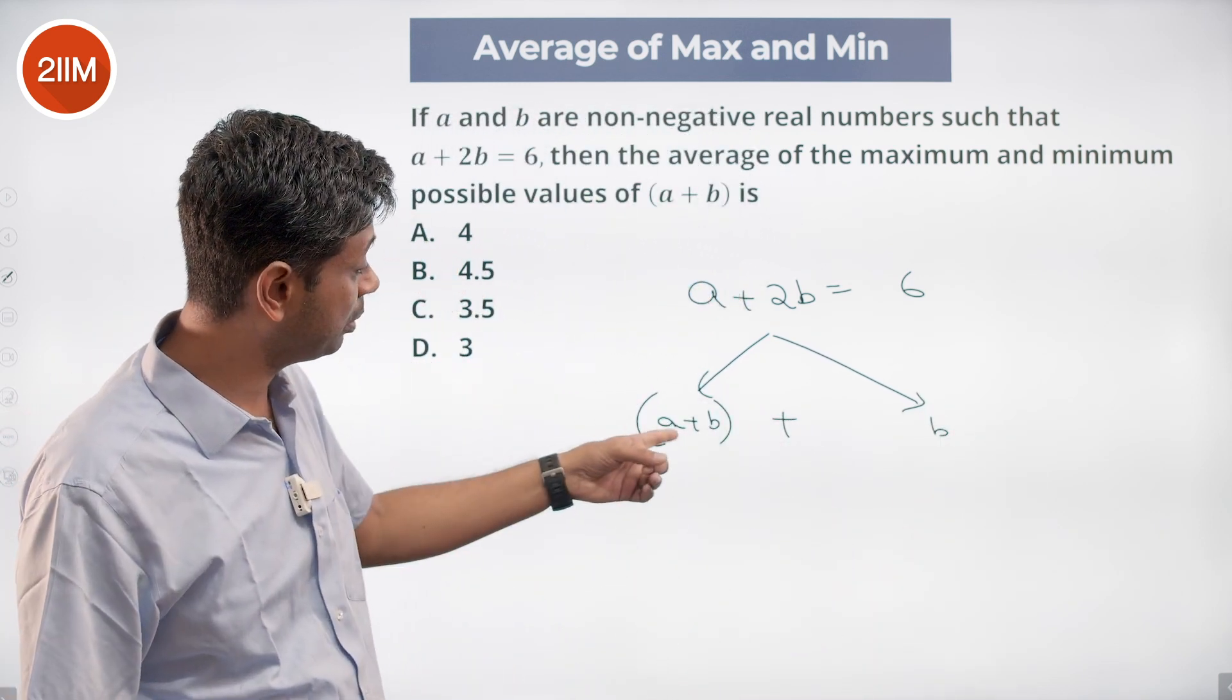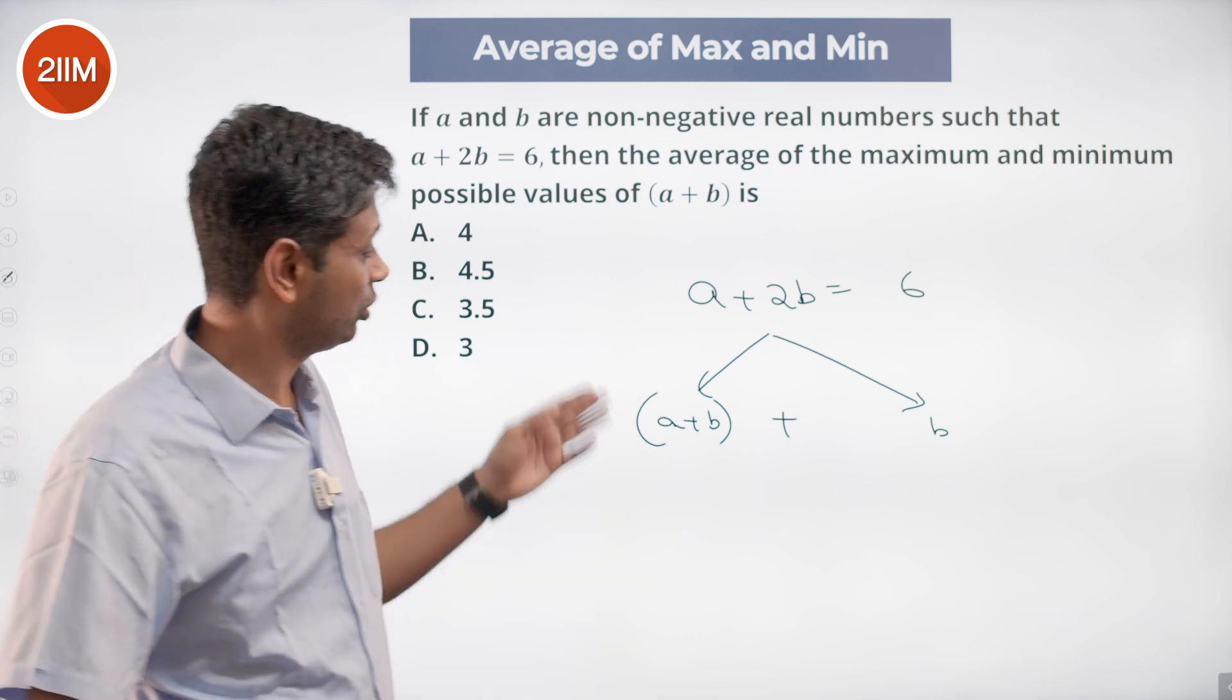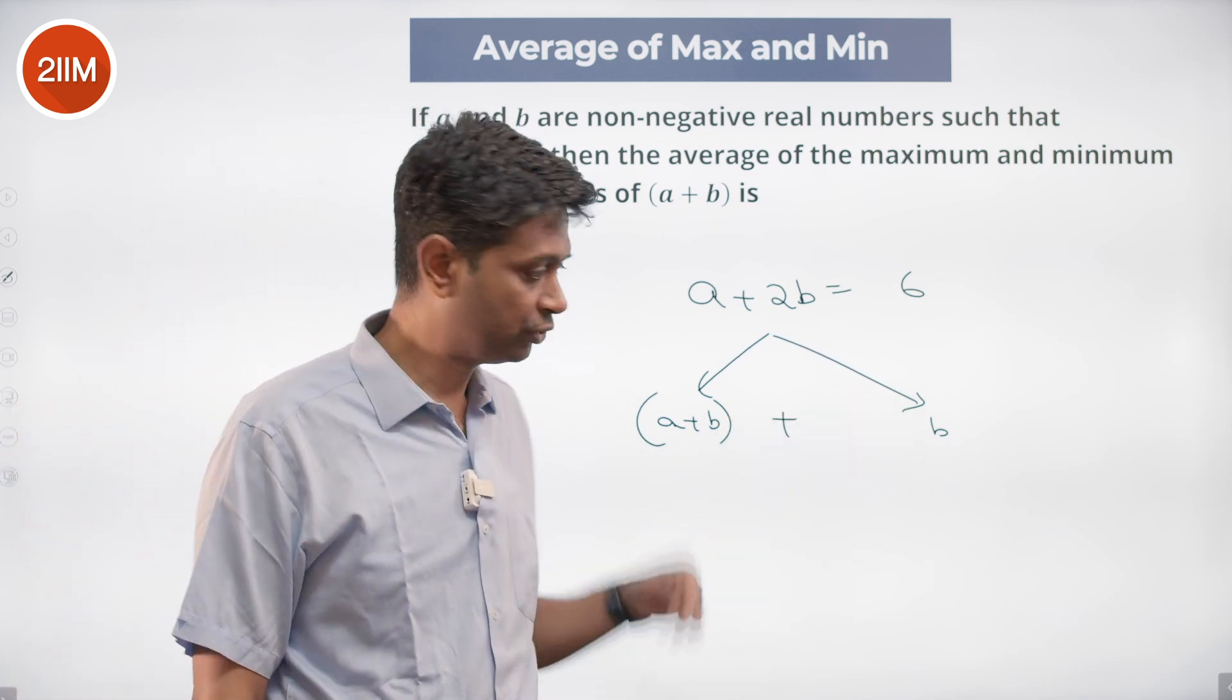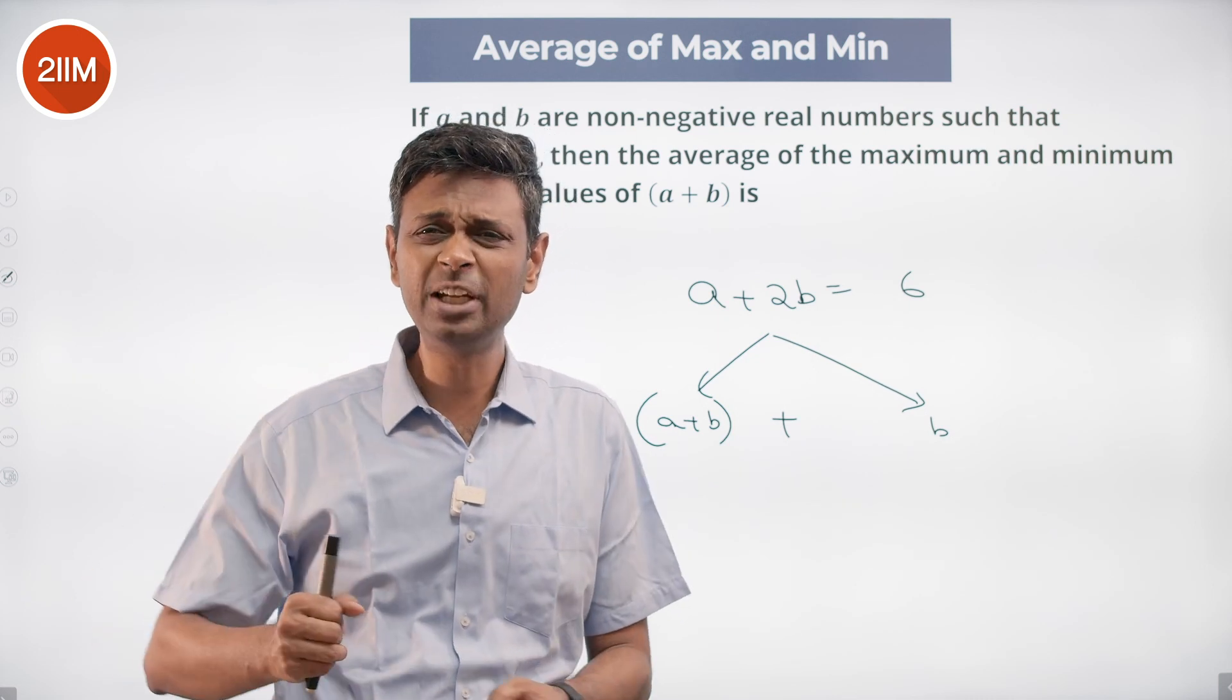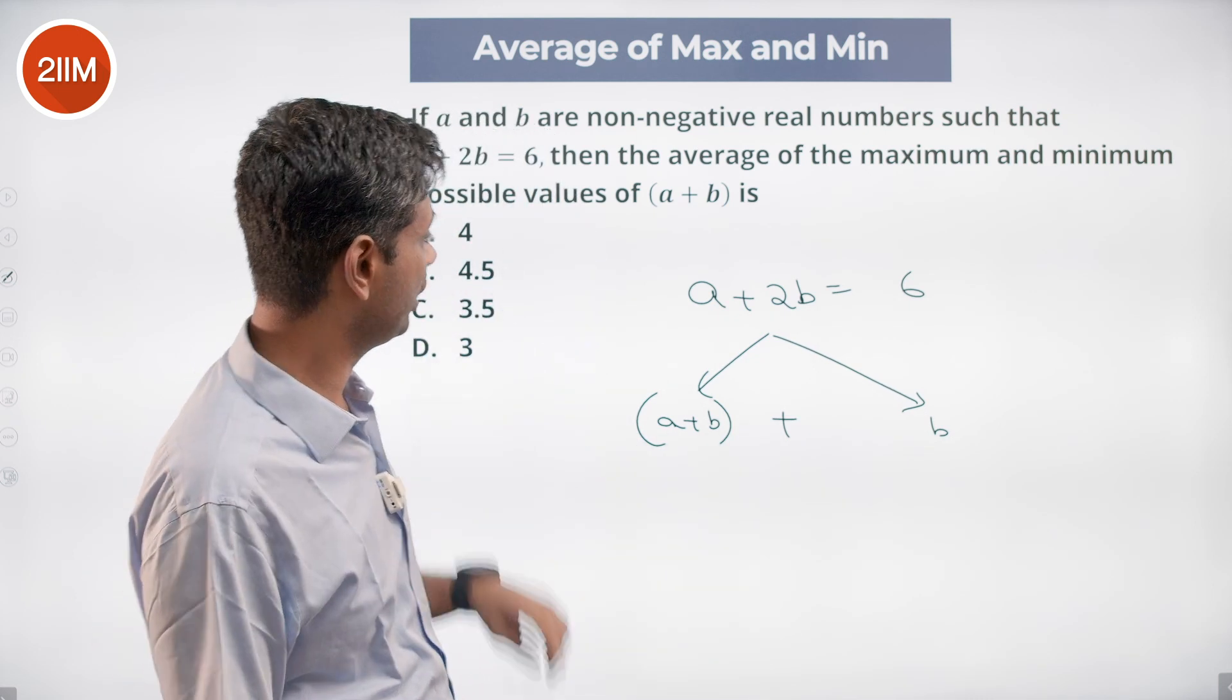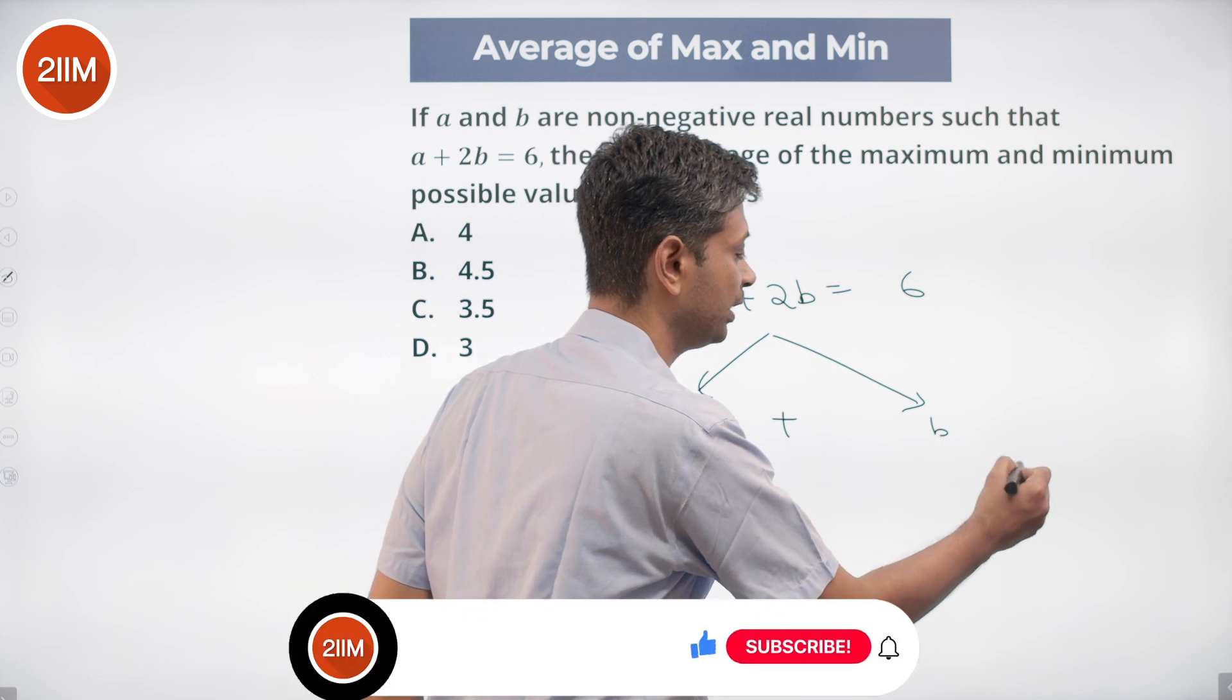We want to find maximum and minimum values of this. This is maximum, that should be minimum. This is minimum, that should be maximum. What is the minimum value b can take? Non-negative.